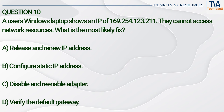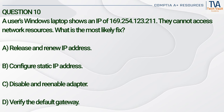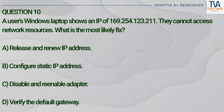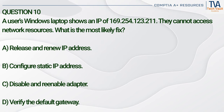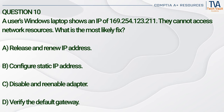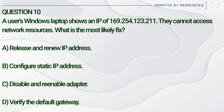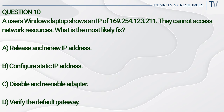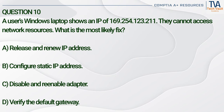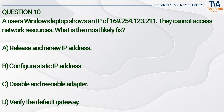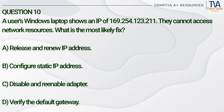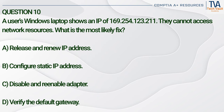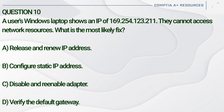Question 10. A user's Windows laptop shows an IP of 169.254.123.211. They cannot access network resources. What is the most likely fix? A. Release and renew IP address. B. Configure static IP address. C. Disable and re-enable adapter. D. Verify the default gateway.